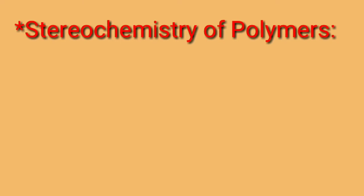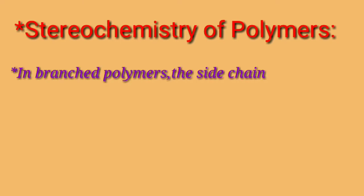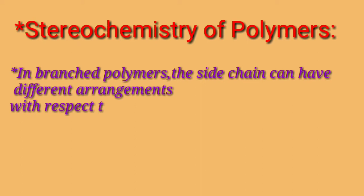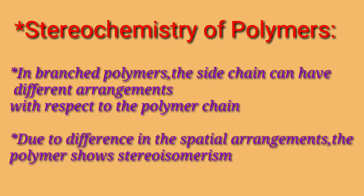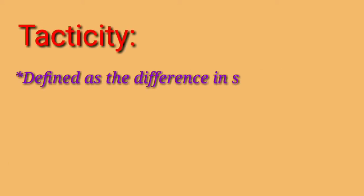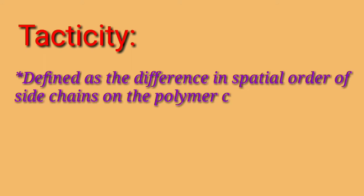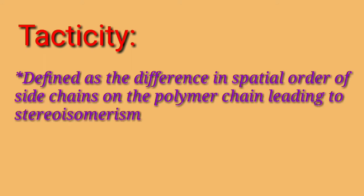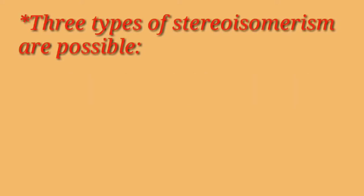Stereochemistry of polymers. In branched polymers, the side chain can have different arrangements with respect to the polymer chain. Due to differences in the spatial arrangements, the polymer shows stereoisomerism. Tacticity is defined as the difference in spatial order of side chains on the polymer chain, leading to stereoisomerism. Three types of stereoisomerisms are possible.